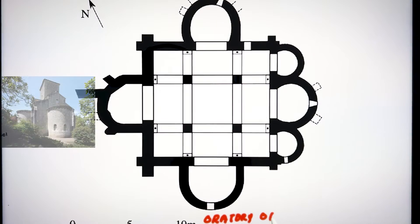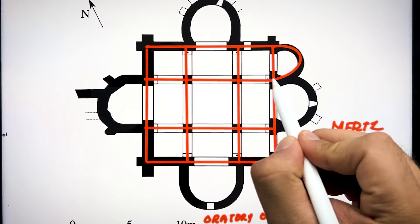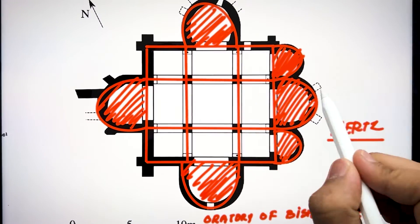The next project discussed is the Oratory of Bishop, designed by Eudes of Metz. Here the Greek cross also followed the system of nine grid with the extension of space in a semi-circular size.